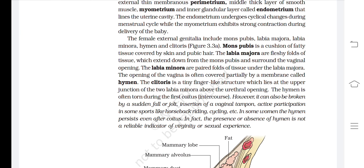The female external genitalia include mons pubis, labia majora, labia minora, hymen, and clitoris. Mons pubis is a cushion of fatty tissue covered by skin and pubic hair. The labia majora are fleshy folds extending down from the mons pubis surrounding the vaginal opening. The labia minora are paired folds under the labia majora. The opening of the vagina is often partially covered by the hymen. The clitoris is a tiny finger-like structure at the upper junction of the two labia minora. The hymen is not a reliable indicator of virginity or sexual experience.